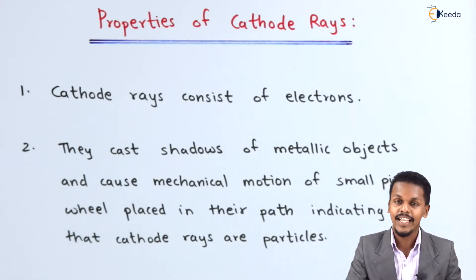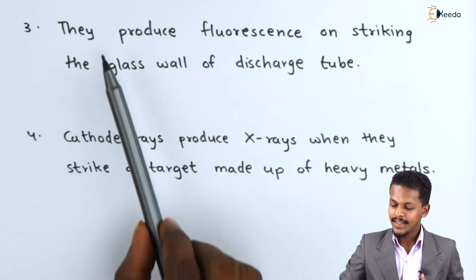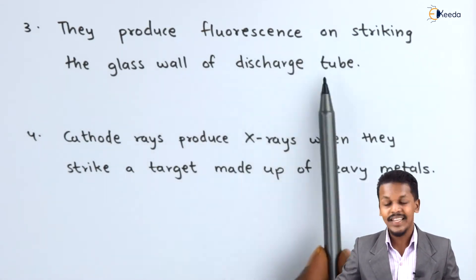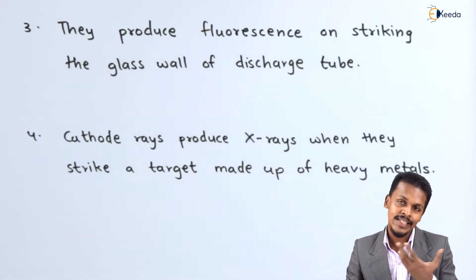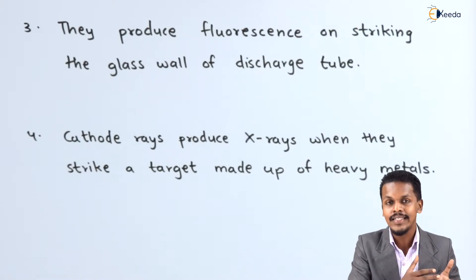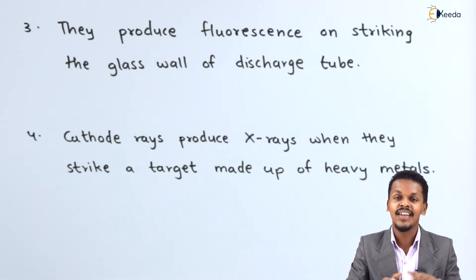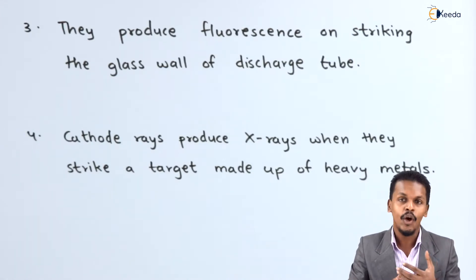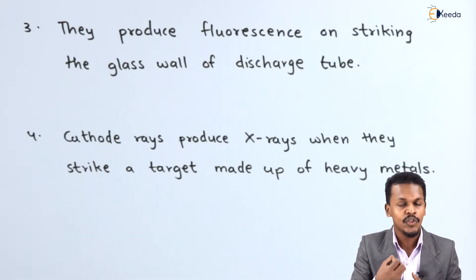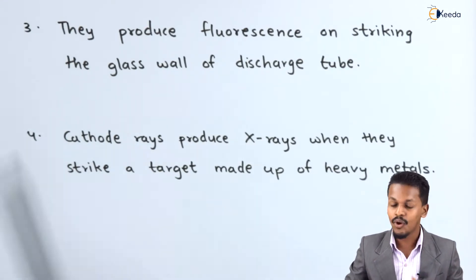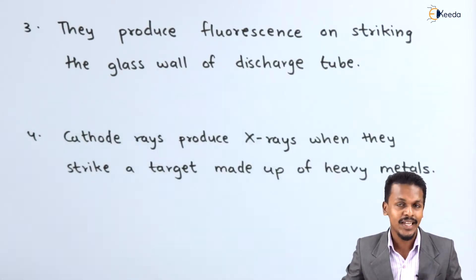The next property is that cathode rays produce fluorescence on striking the glass wall of the discharge tube. As discussed in the previous topic, whenever the cathode rays hit the glass tube, they cause the glass to glow — this is a key property of cathode rays.